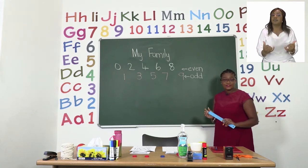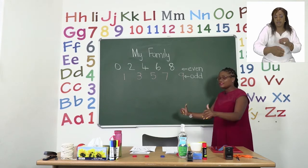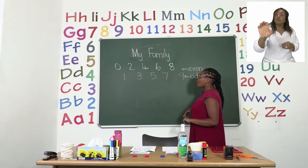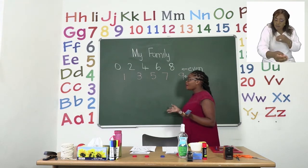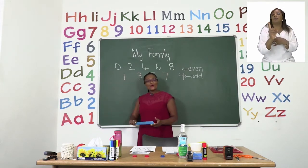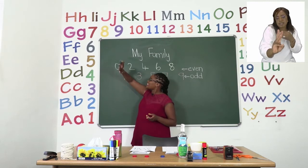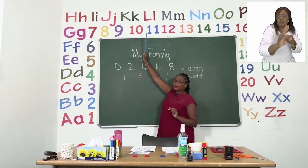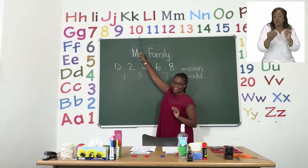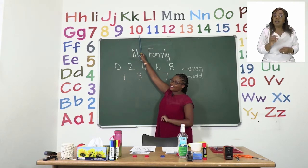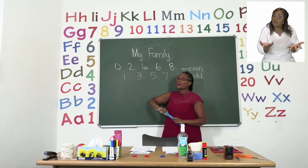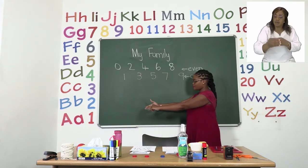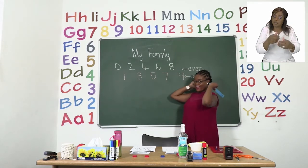Now we are going to talk about the numbers after. The numbers after mean that we are talking about the numbers standing behind our number. So if I were to say what is the number after or behind 5, your answer would be it is 6. And what if I say what is the number after 10? After, which means behind 10 — our answer is 11. So remember boys and girls that before means in front and then after means behind.